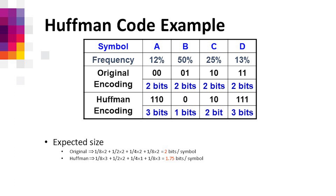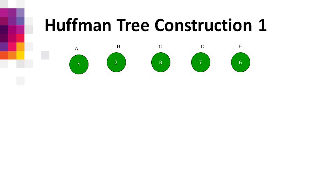The total is 2 bits per symbol for original encoding and 1.75 bits per symbol for Huffman coding. Representing this with a binary tree: the binary value for A is 110, B is 10, C is 0, and D is 111. To build the tree, we initialize each symbol as a leaf with weight equal to its frequency, then select the 2 nodes with the lowest frequency and merge them into a new node.